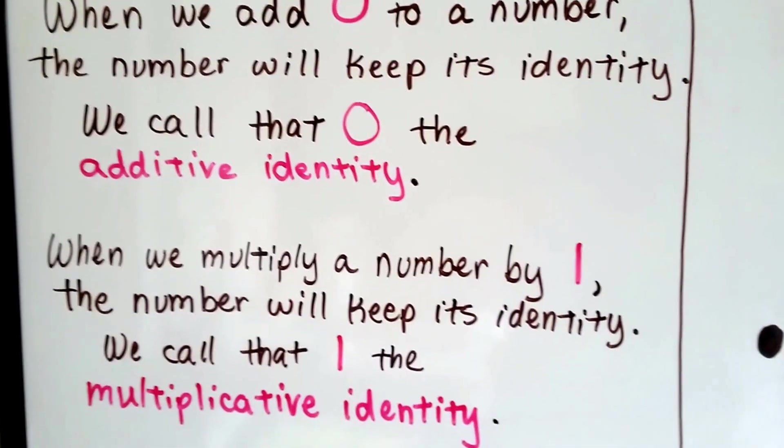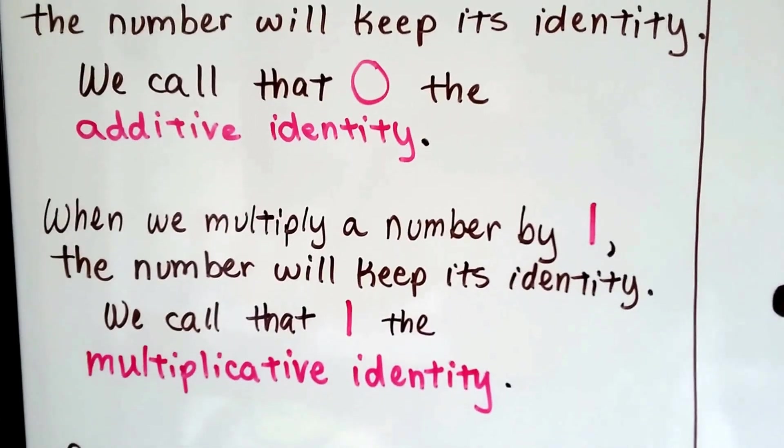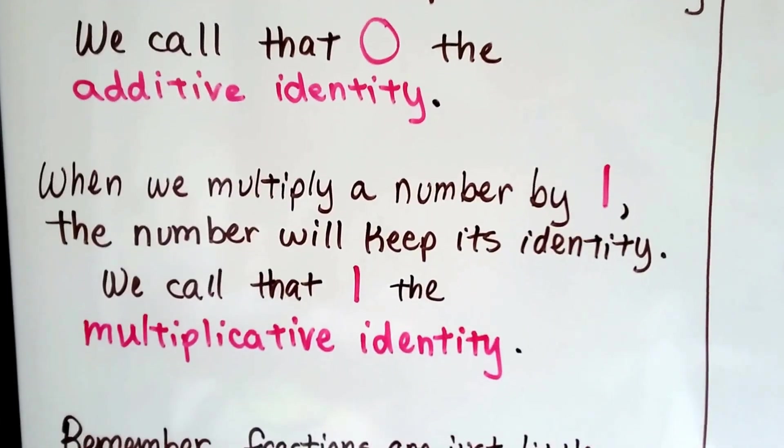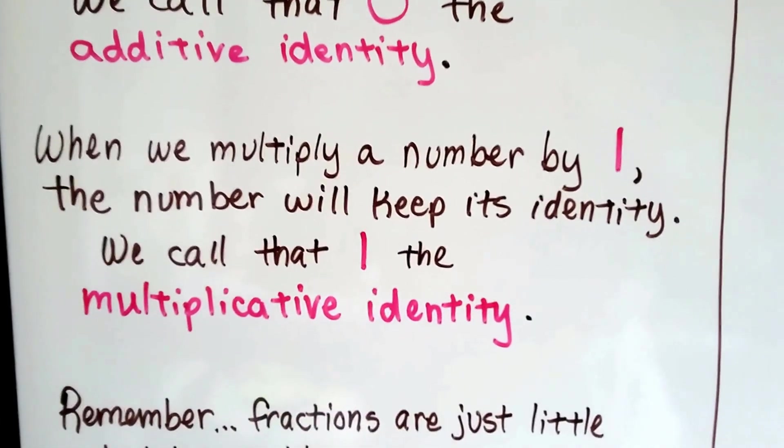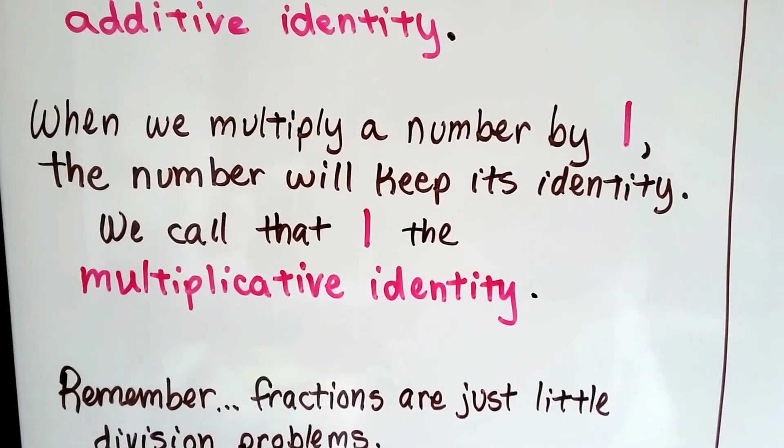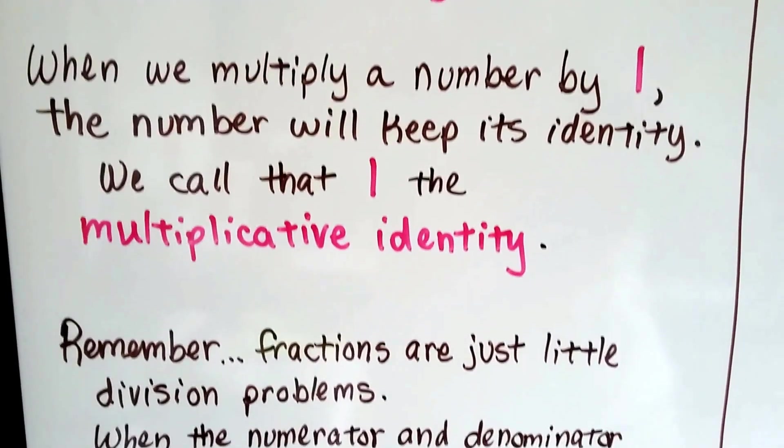When we multiply a number by one, the number will keep its identity. And we call that one the multiplicative identity.